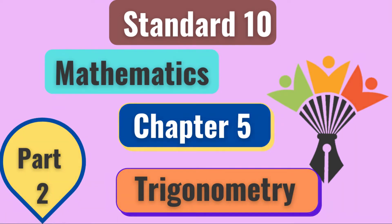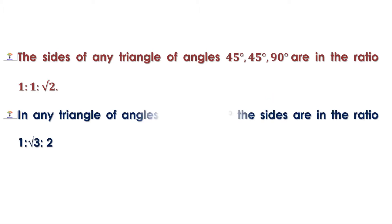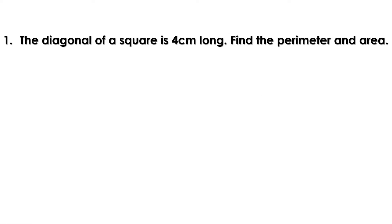Welcome to Maths Companion. Let us recall what we have learned in the last video. The sides of any triangle with angles 45°, 45°, and 90° are in the ratio 1:1:√2. In any triangle with angles 30°, 60°, and 90°, the sides are in the ratio 1:√3:2. There were two homeworks — let us check the answers now.